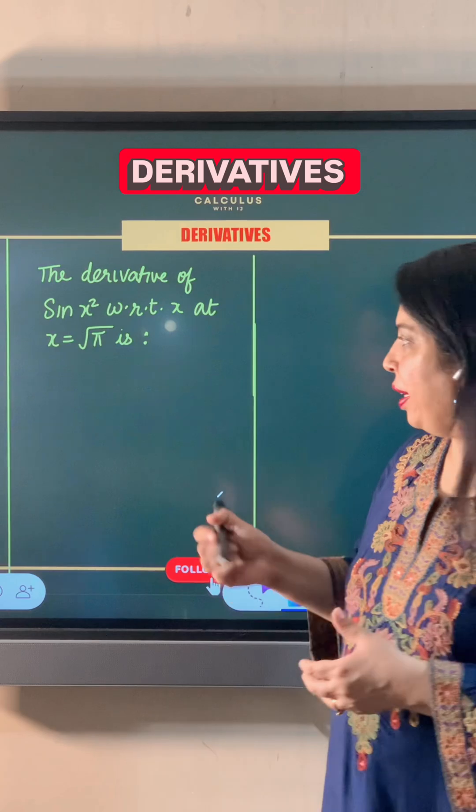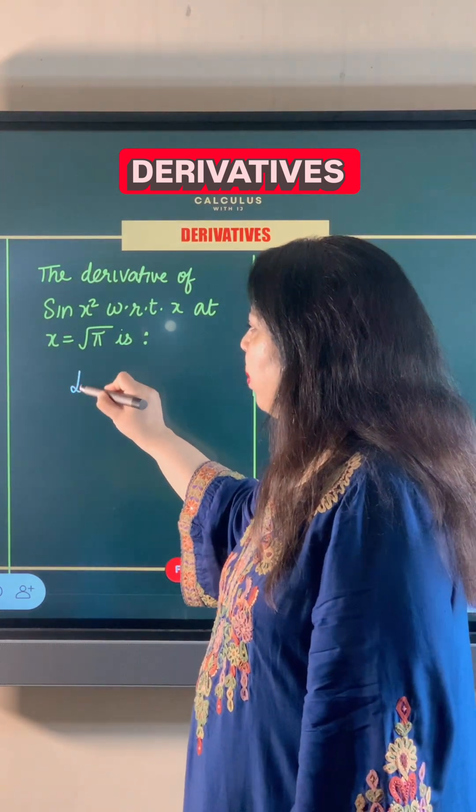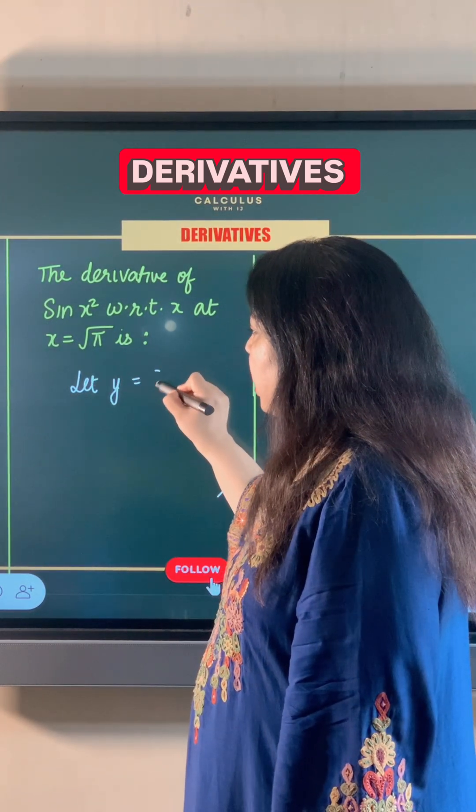To find its derivative, let's take sin x² as y. So y is equal to sin x².